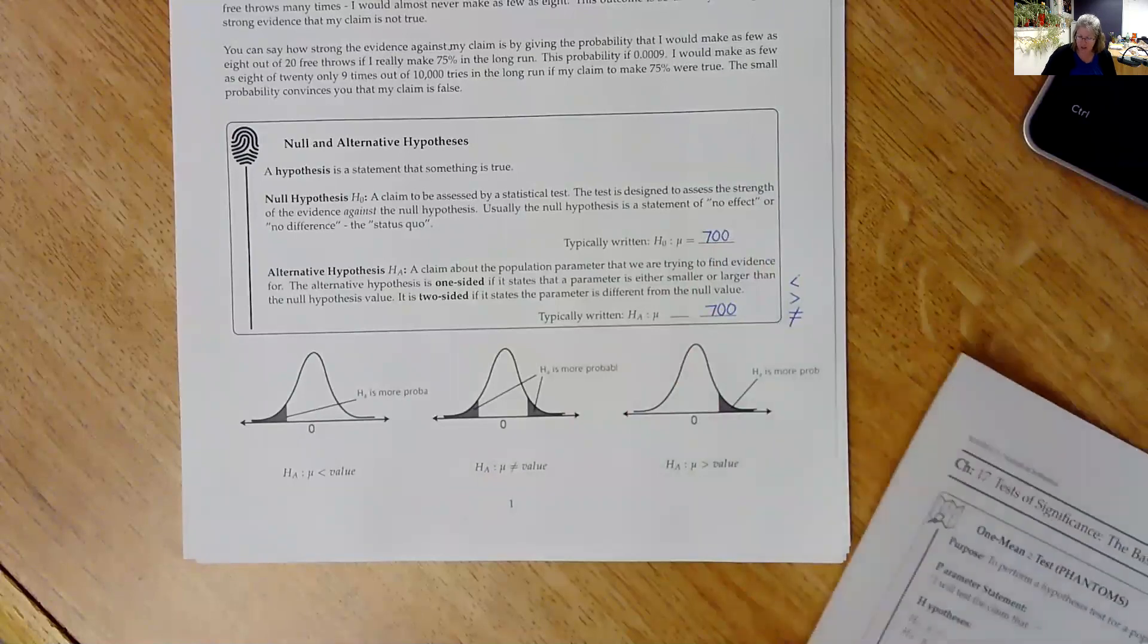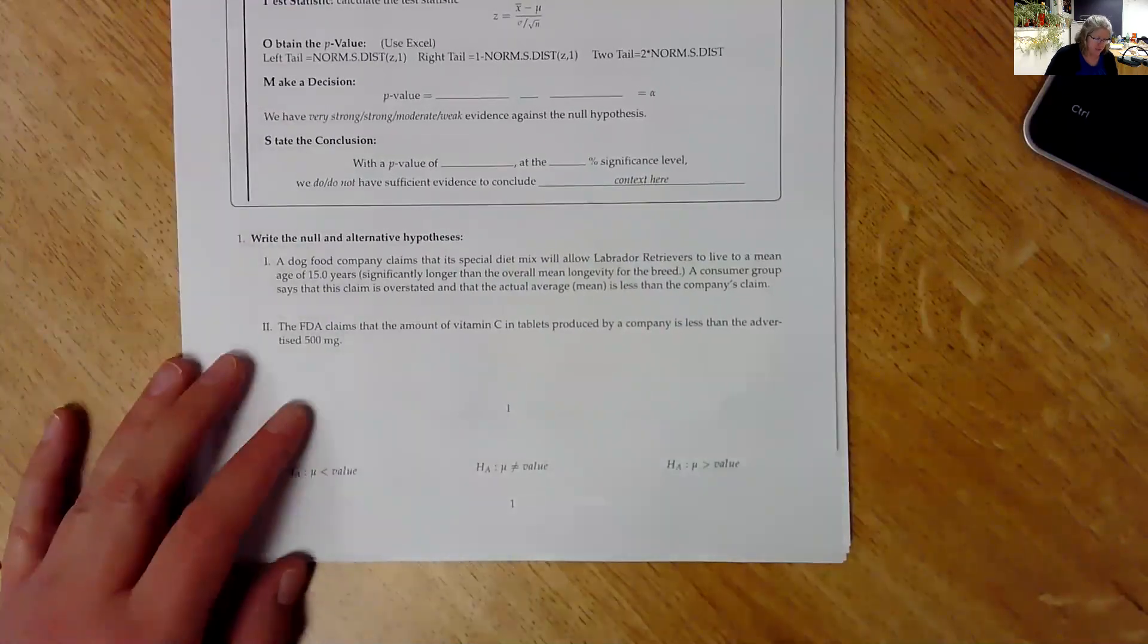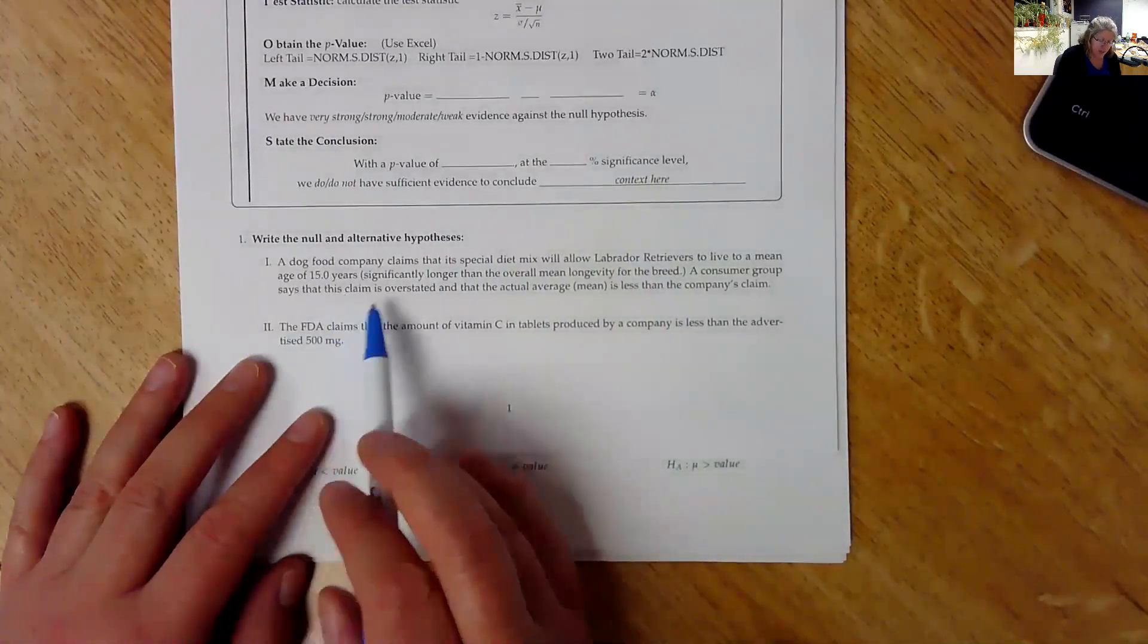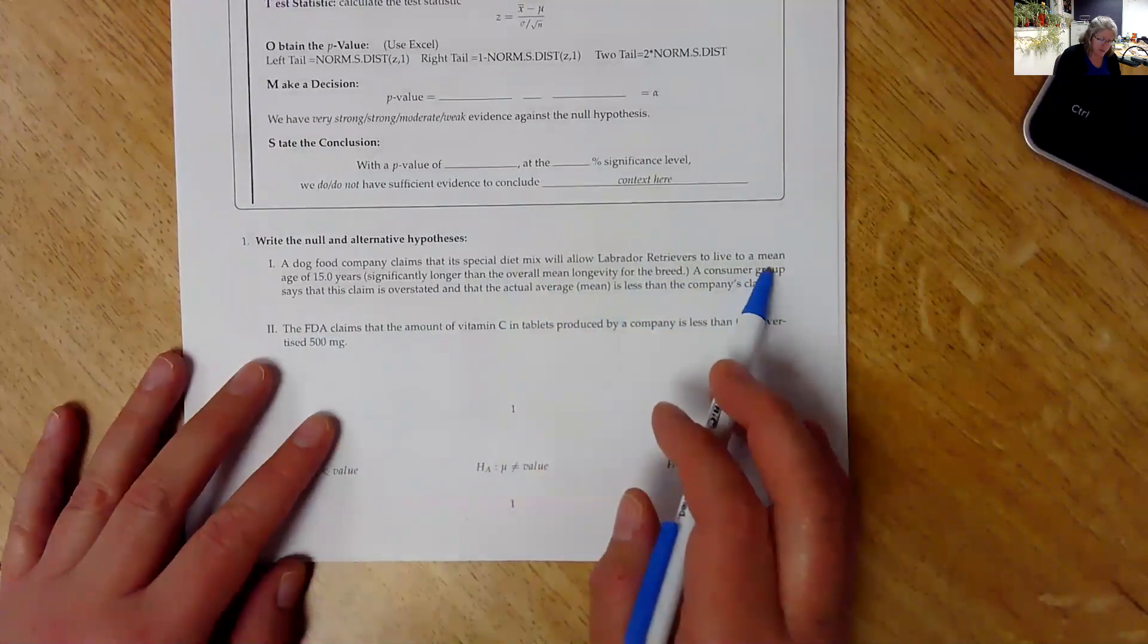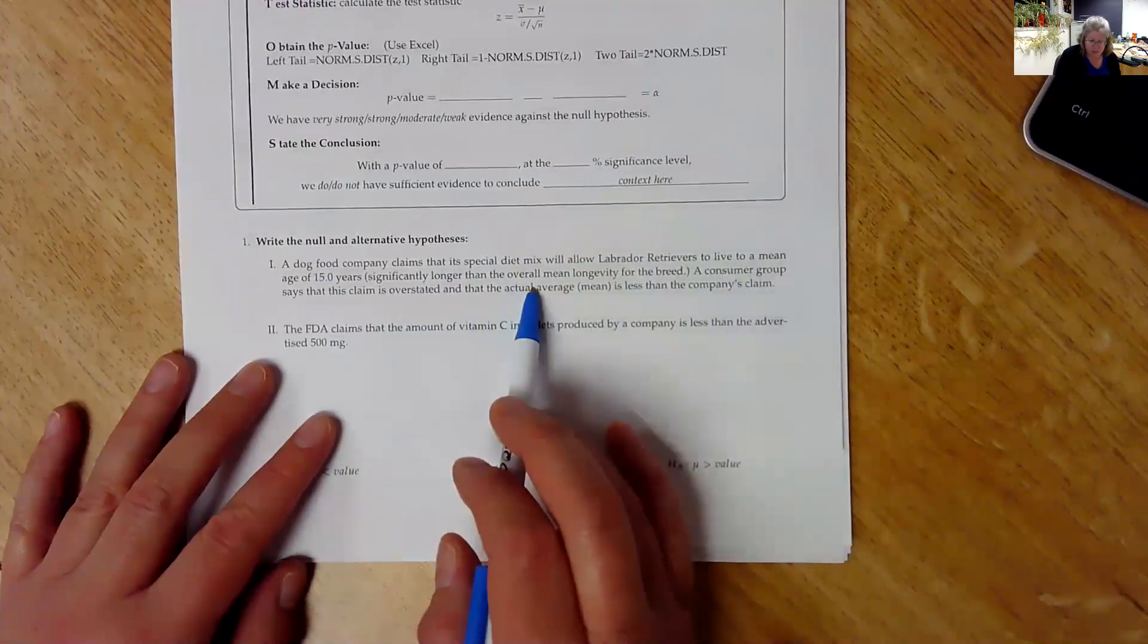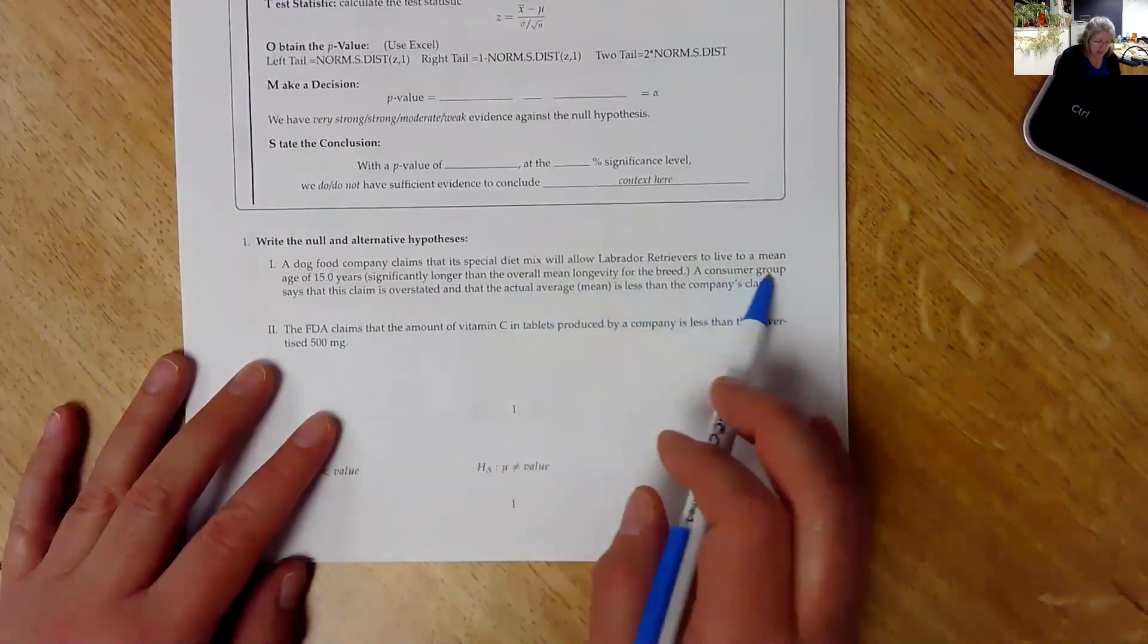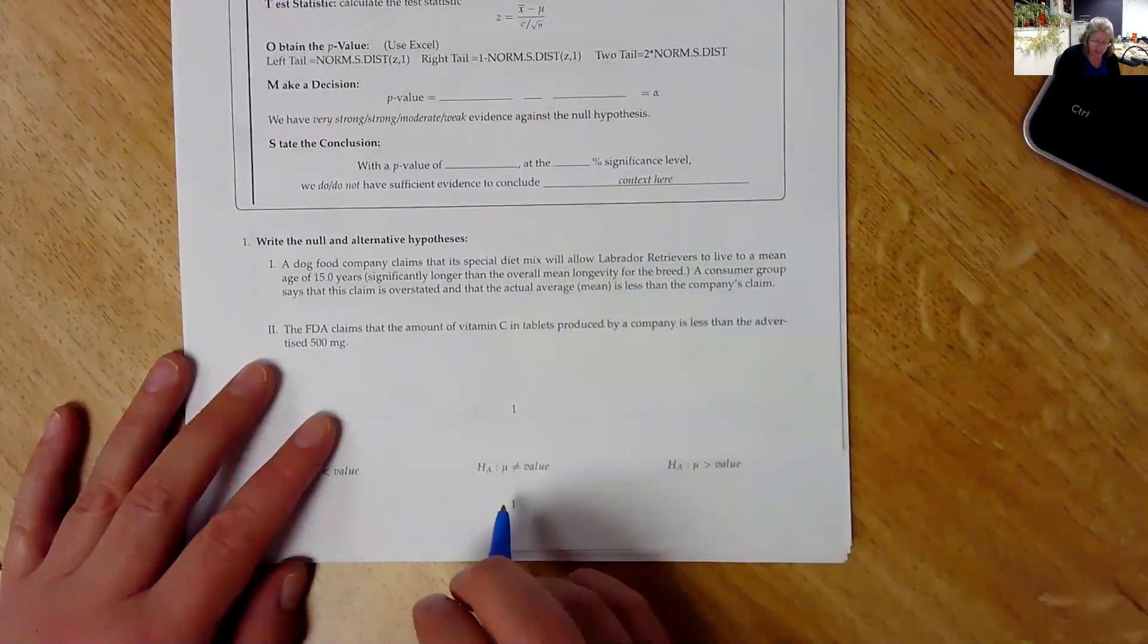So let's look at your classwork. On the bottom of page one and the top of page two, you have a couple of hypotheses to write. So let's look at this first one together. A dog food company claims that its special diet mix will allow Labrador retrievers to live to a mean age of 15 years, significantly longer than the overall mean longevity for the breed. The consumer group says that this claim is overstated and that the actual average is less than the company's claim.